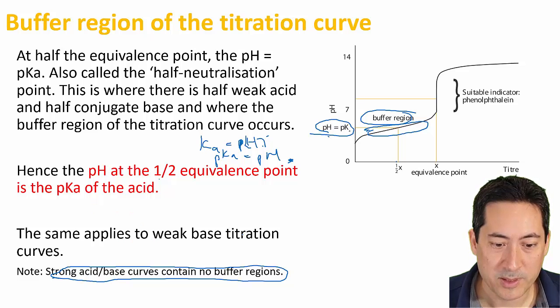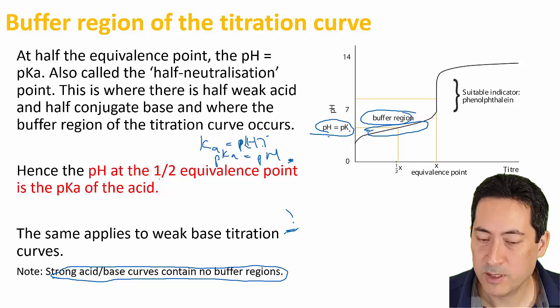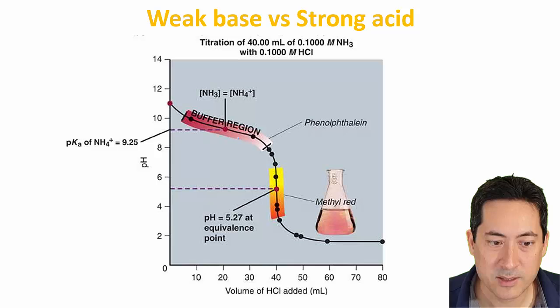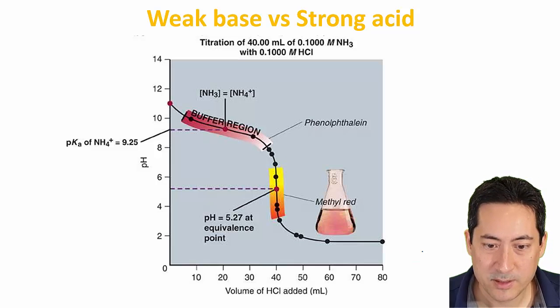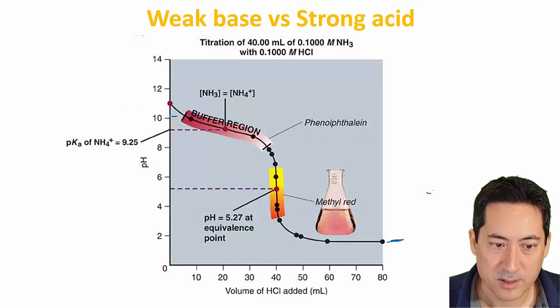This all applies to a weak base, strong acid curve, which is coming up in the next slide as well. Let's move on to those curves. We have here the weak base, strong acid. You can see that this is about one, this one's sort of quite high, actually, 11, that's ammonia, even though it's a weak base.